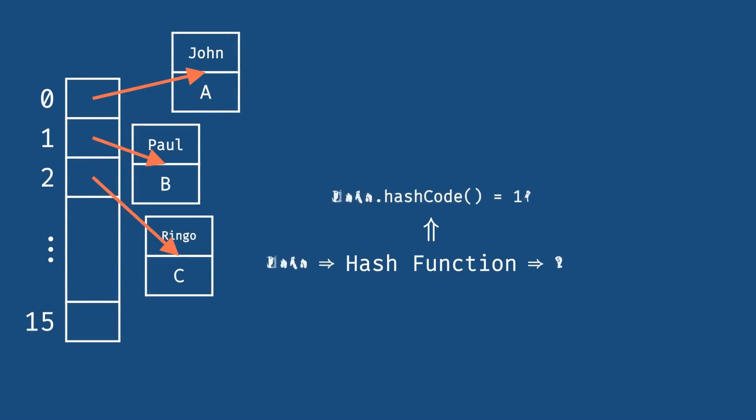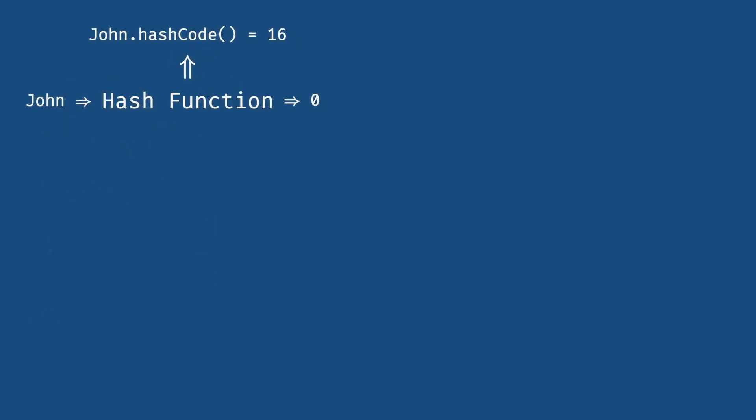After we find the slots on the array of buckets, we would then create an entry. This is called an entry. It's a map dot entry object. That's going to wrap the actual two values, the key and the value that we are adding to the map. So we would have the key John, the value A, and we have a pointer to the next element. So that's how each entry would be stored after we find the key to the array of buckets.